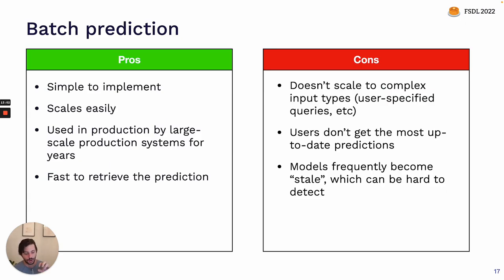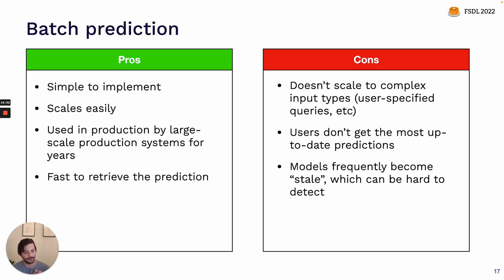What are the pros and cons of running your model offline and putting the predictions in a database? The biggest pro is that this is really easy to implement — it reuses existing batch processing tools you may already be using for training your model. It doesn't require you to host any new web server, you can just put the predictions in the database your product is already using. It also scales very easily because databases themselves have been engineered for decades to scale really well, and it's used in production by very large scale systems at large companies for years.